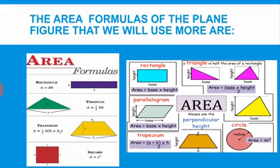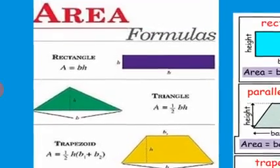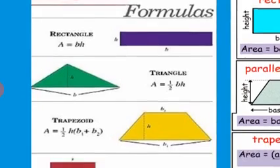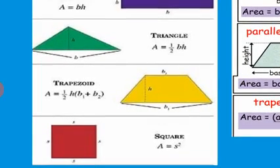In the last video, we studied the formulas for the area of plane figures that we will use most. The area of a rectangle is base times height. The triangle is 1/2 times base times height. The trapezoid is 1/2 times height times (base 1 plus base 2). And the area of a square is side length times side length, which is the side to the second power.